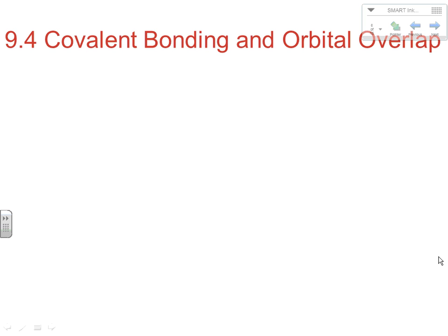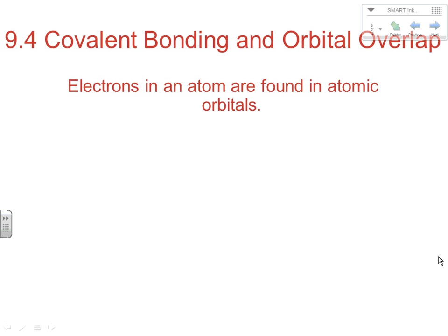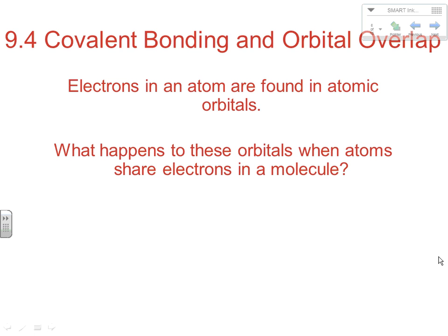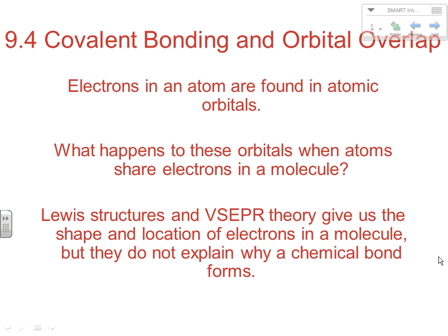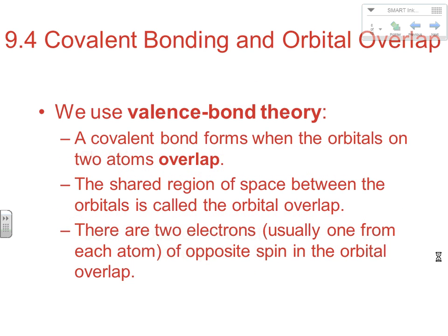In the next section we get into covalent bonding and what's known as orbital overlap. We have orbitals that electrons exist in inside atoms. When we have valence electrons involved in bonding, the sharing of electrons will be in a different region of space than the electrons that originally existed inside the atom, forming new types of orbitals in covalent situations inside molecules. Lewis structures and VSEPR theory give us the shape and location of electrons in a molecule, but they don't really explain why chemical bonds actually form. That's where valence bond theory comes in.